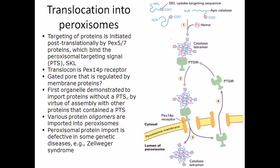The unique feature of peroxisome targeting is that the peroxisome signal sequence is located at the C-terminal end of the protein, not the N-terminal end. This is different from mitochondria and chloroplasts, where the targeting sequences are present at the N-terminal end. In the case of peroxisomes, the signal is at the C-terminal, as you can see here.